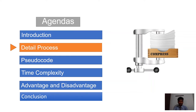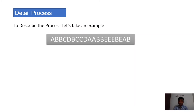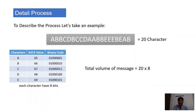Now, the detail process. To describe the process, let's take an example message. There are five characters with ASCII values 65, 66, 67, 68, and 69. Each character's binary representation takes 8 bits. There are a total of 20 characters in the message, so sending it directly takes 20 characters multiplied by 8 bits, totaling 160 bits.